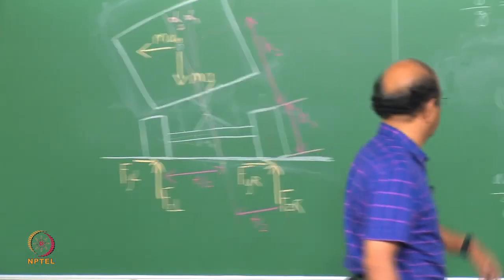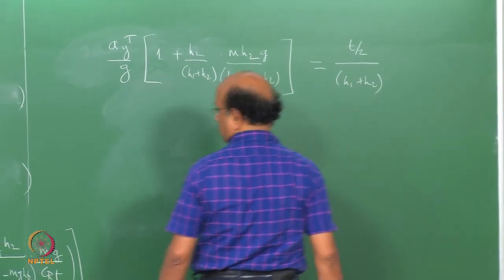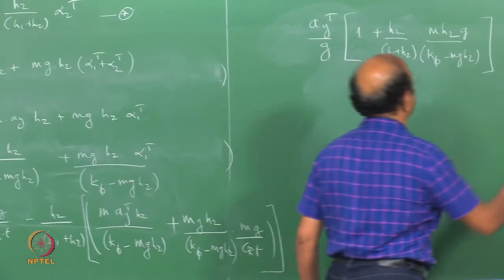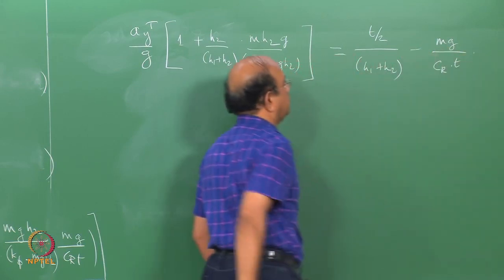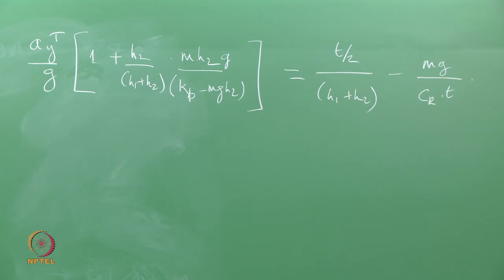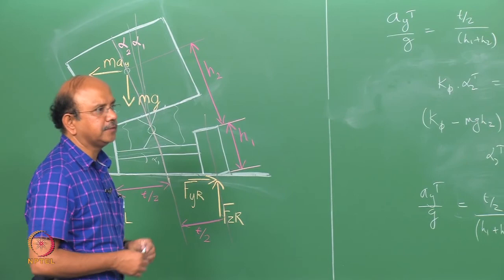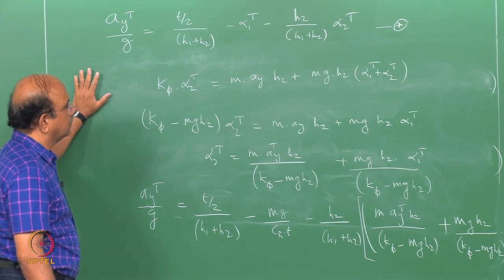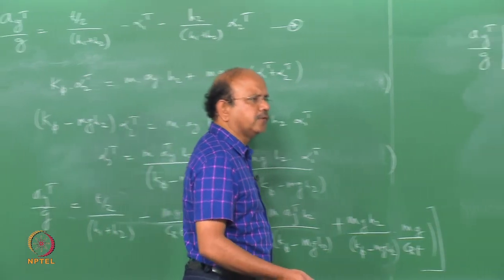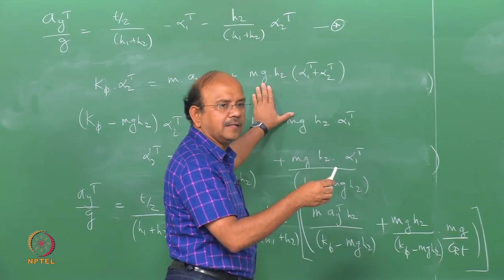After rearranging these terms, we can write: a_y_threshold/g = [T / 2(h_1+h_2)] · {1/(1 + h_2·m·h_2/(k_phi−Mg·h_2)/(h_1+h_2))} − correction terms involving 1/C_R* and 1/k_phi*, where k_phi* = k_phi/(Mg·h_2) and C_R* = C_R·T/Mg. Mg is contributing here because of the roll — the d'Alembert centrifugal force tries to rotate in one direction while Mg provides a restoring moment.